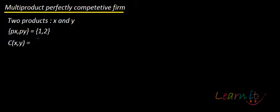Let's talk about one of the economic applications of unconstrained optimization. Suppose there is a multi-product perfectly competitive firm with two products, X and Y. The price of X is 1 and the price of Y is 2. The cost function is given as 2X squared plus XY plus 2Y squared.